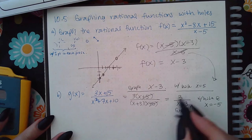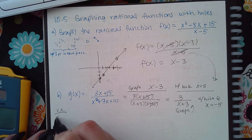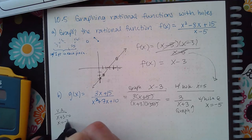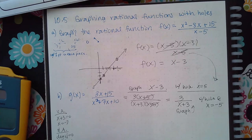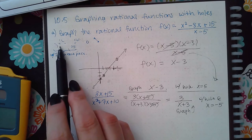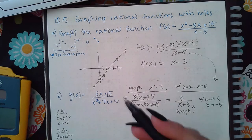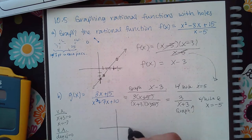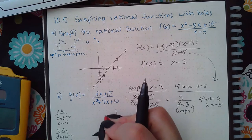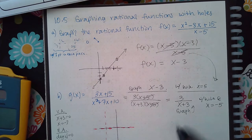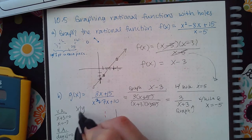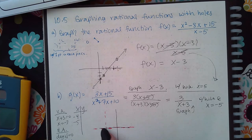Now graphing the simplified fraction: the vertical asymptote is where the denominator equals zero, and the horizontal asymptote — since the degree of the numerator is 0 and the degree of the denominator is 1 — is automatically at y equals 0. I select the vertical-and-horizontal icon, place the vertical asymptote at x equals negative 3, the horizontal at y equals 0, then make a table with two points on each side: negative 4, negative 5 to the left, and negative 2, negative 1 to the right.